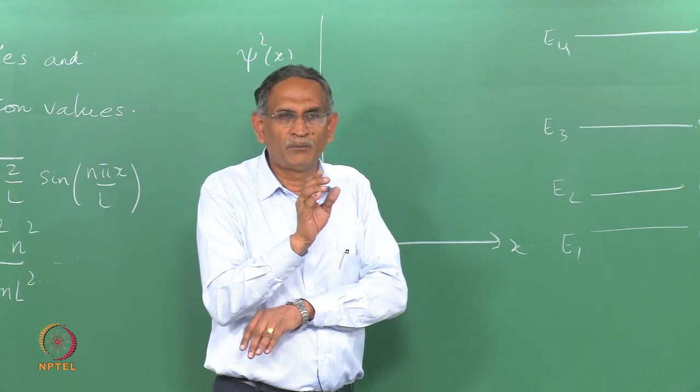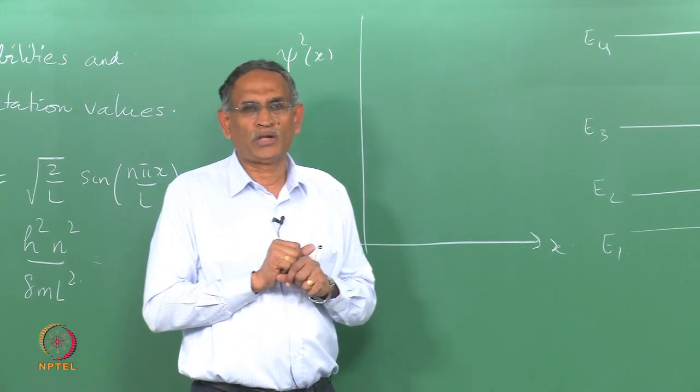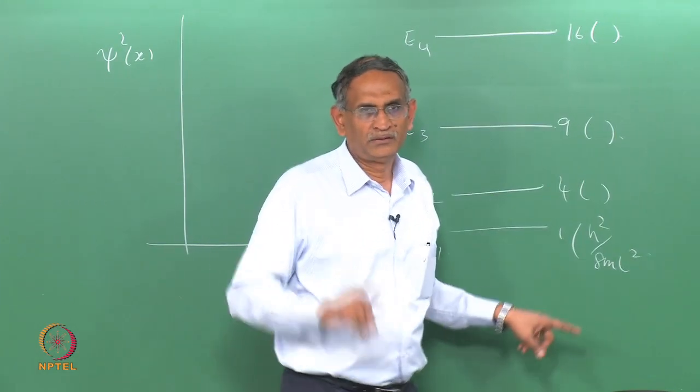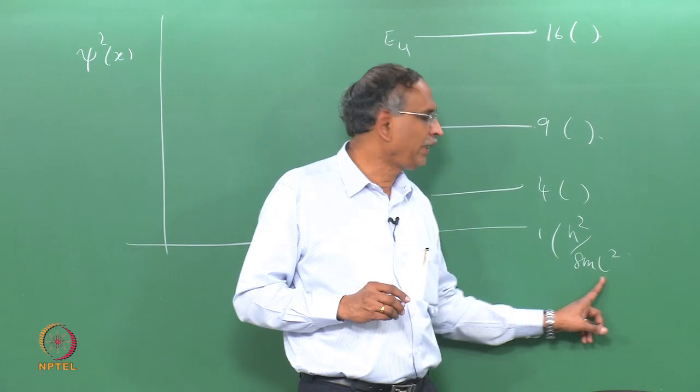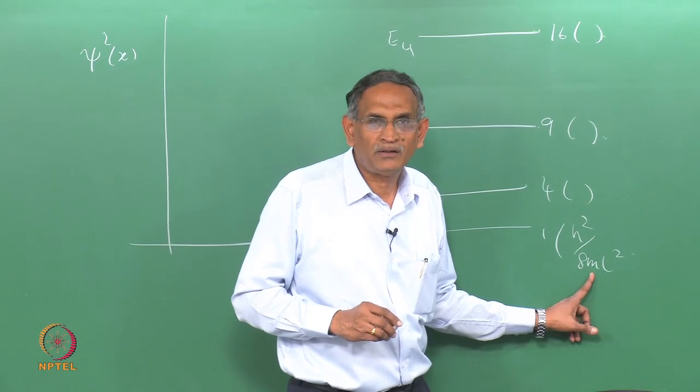For very very large values of n, that is a classical limit and that classical limit can be obtained by doing some manipulations here by choosing a heavy particle, so that the gaps are smaller and therefore the larger energies are reached very quickly.